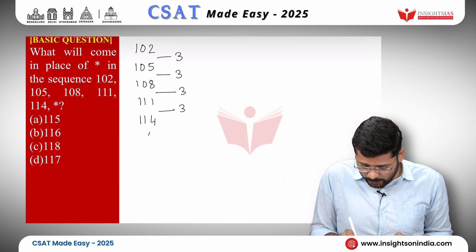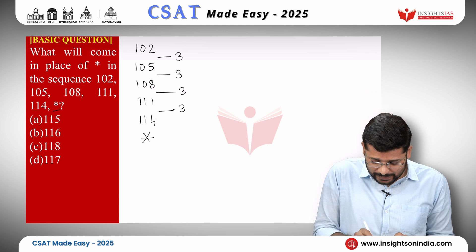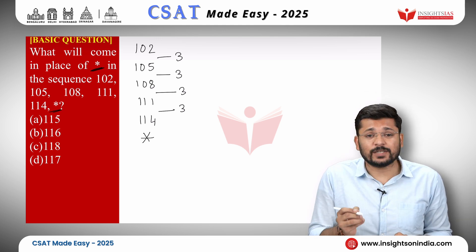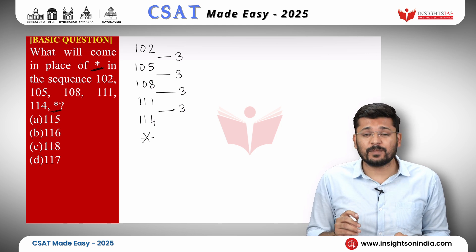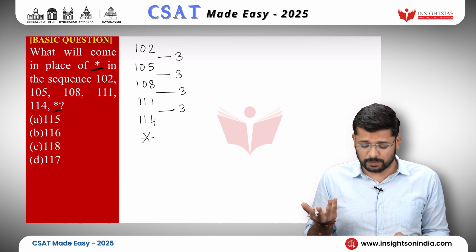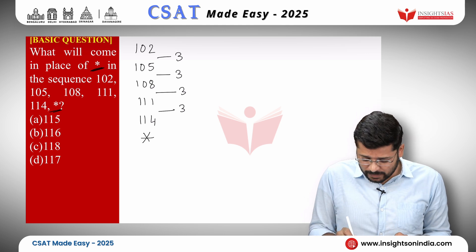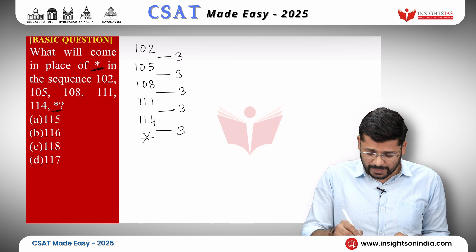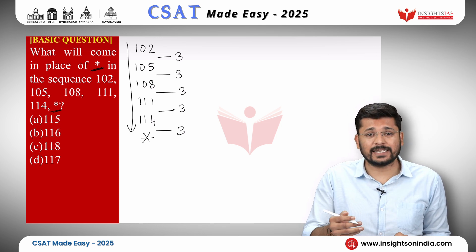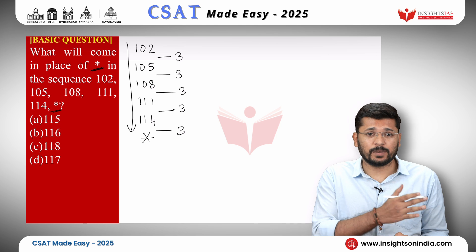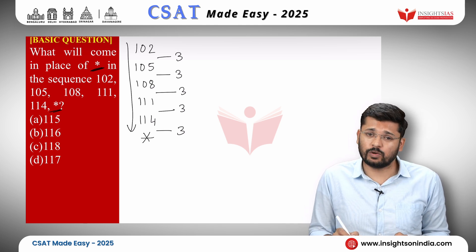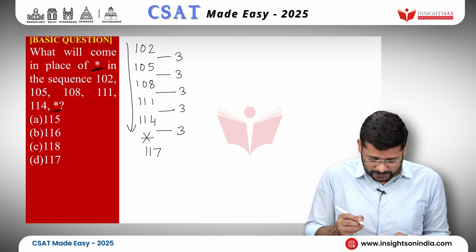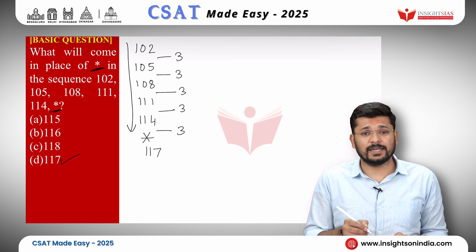They have given that the next number is asterisk and asked what comes in its place. Since the numbers are in ascending order and the difference is consistently 3, the next number will be 114 plus 3, which is 117. Easy question, easy answer. Your answer is option D.